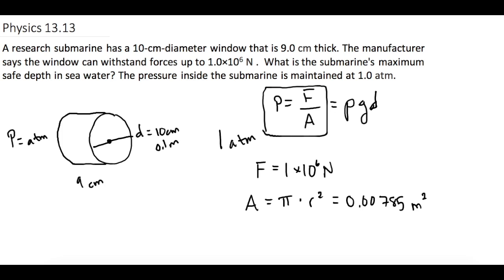If we took this force and divided it by this area, we would know the maximum pressure that we could have out here. Then we could set that pressure equal to rho gd and solve for d.